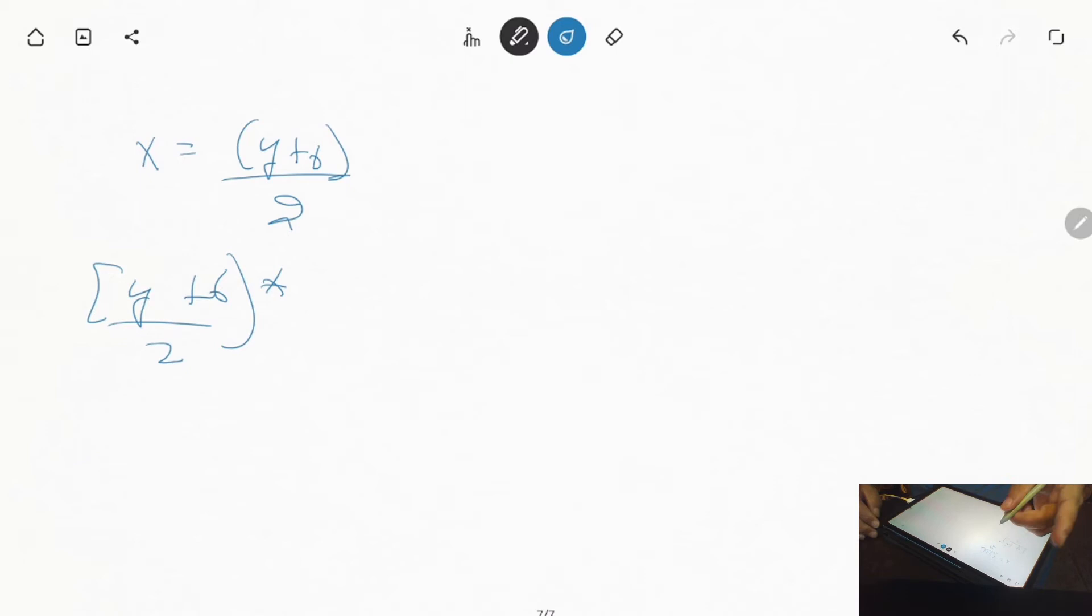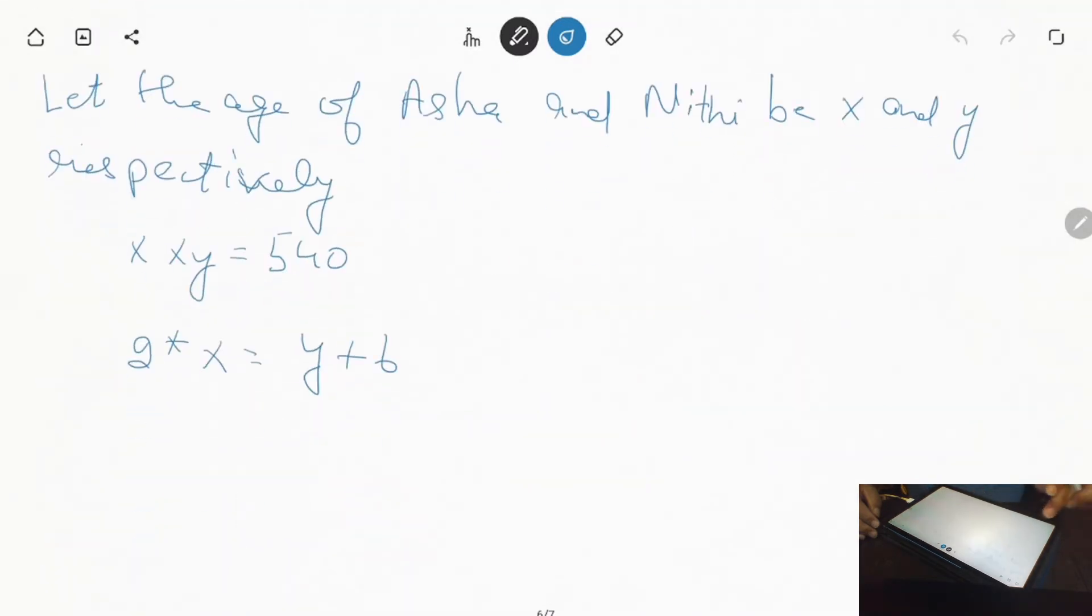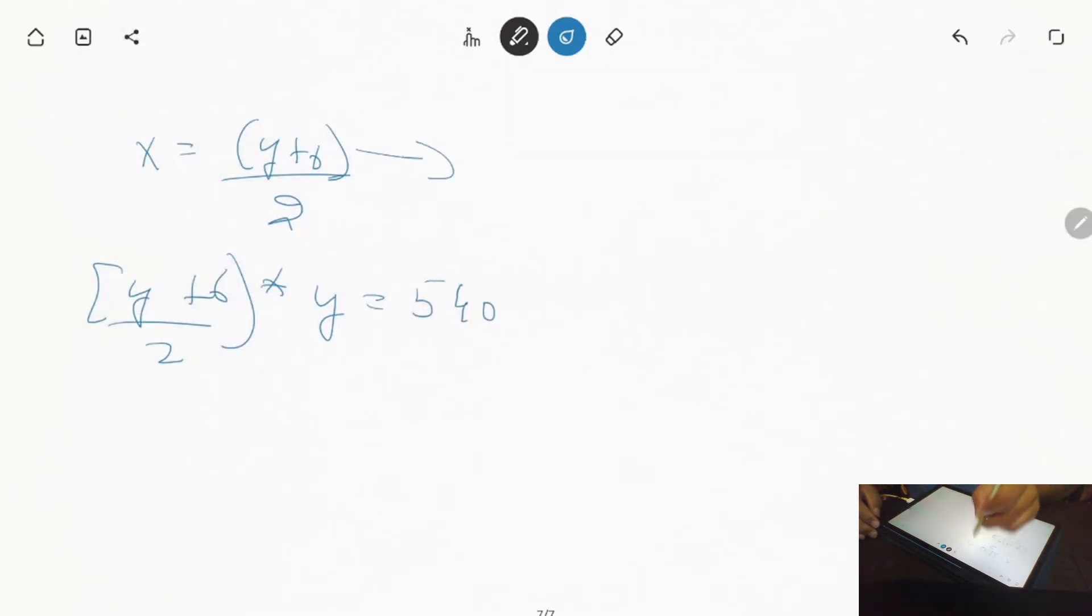When we substitute X value in the upper equation, we put the value in the upper equation. So this equals 540. This is our equation 1, this is our equation 2, and this is our value.